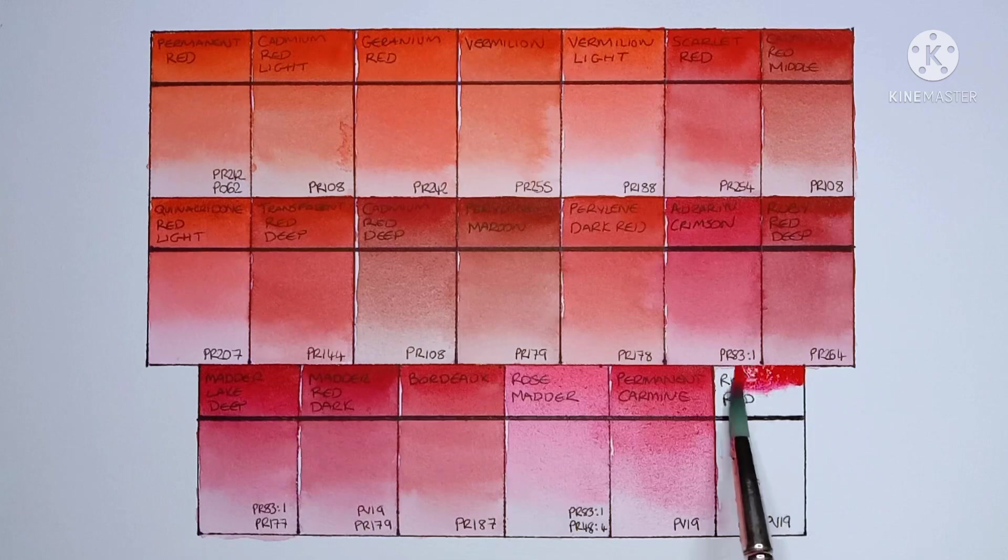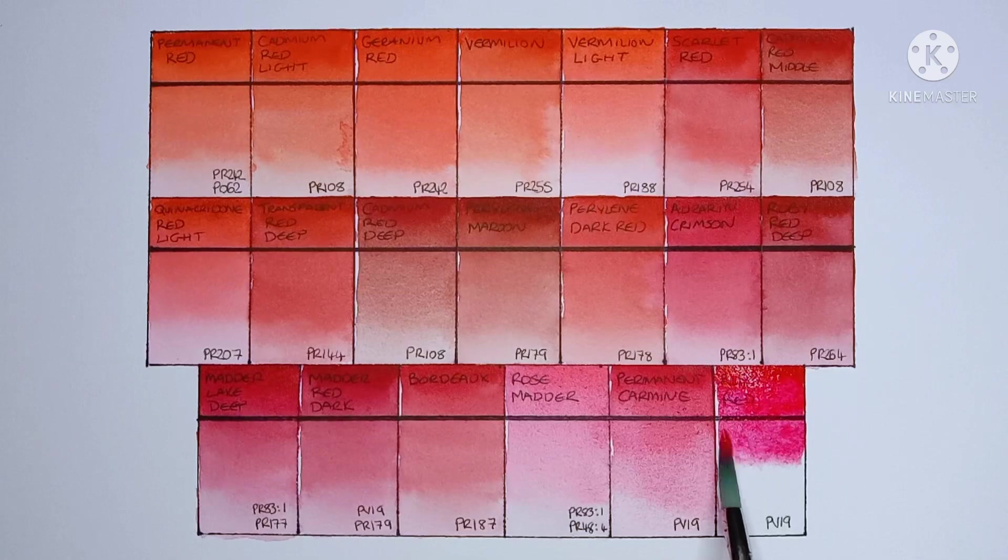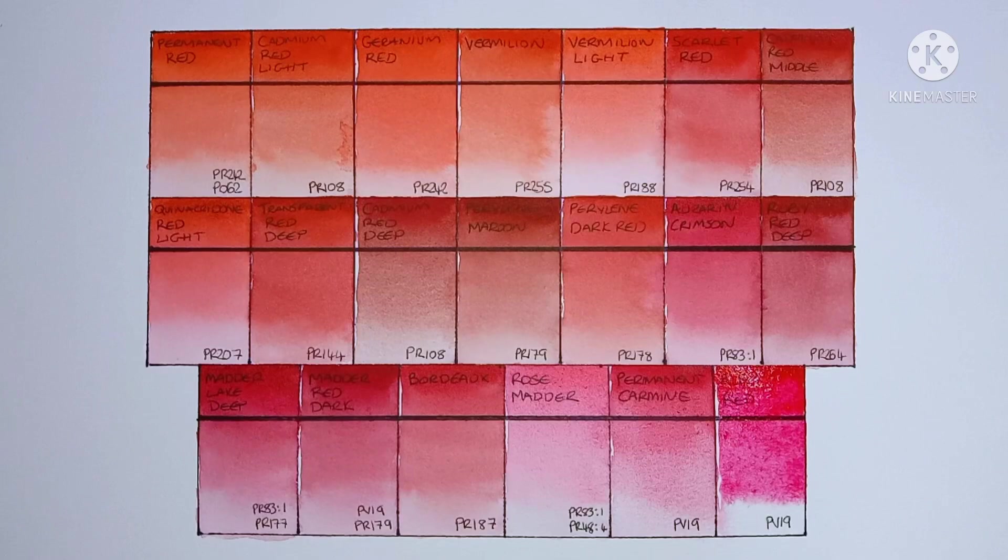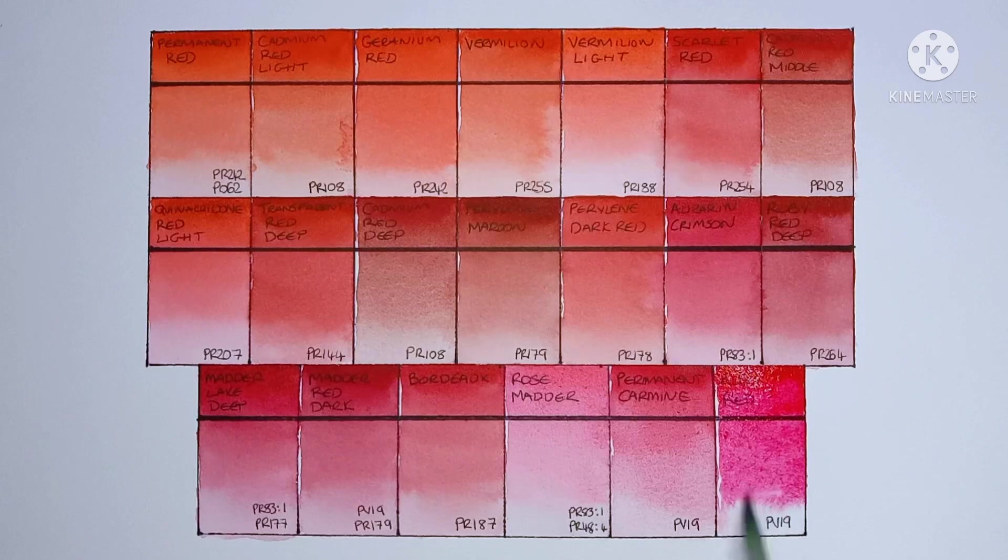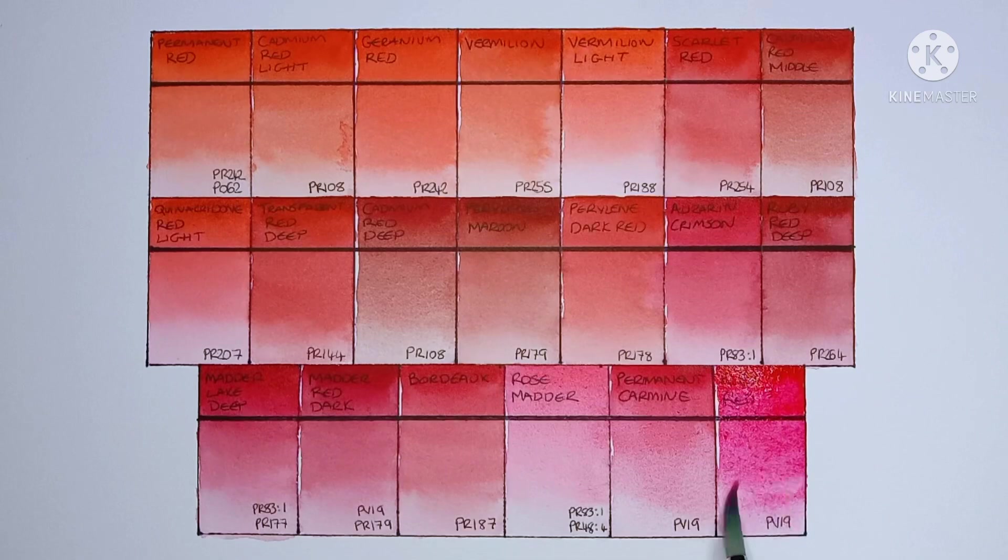And then finally we've got ruby red, which is also PV19. Wow, this one's really bright. I wasn't expecting that. It's almost magenta-like I guess. Hmm, now I'm starting to think I might like this one more than the carmine.